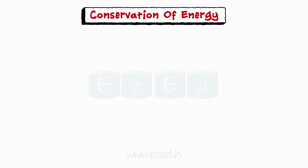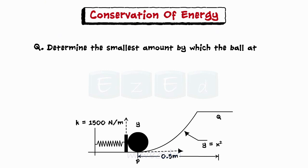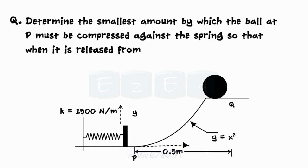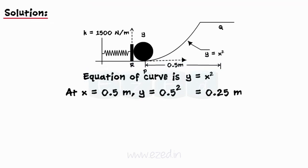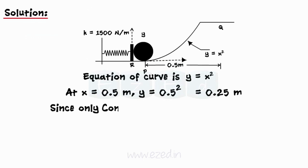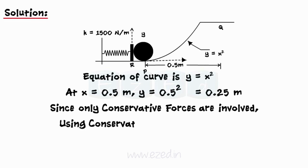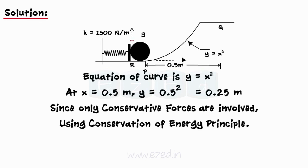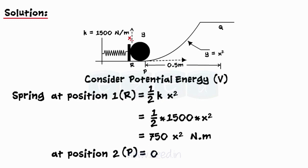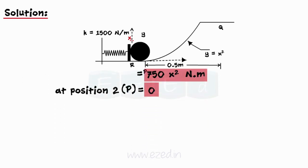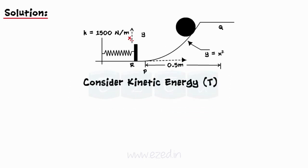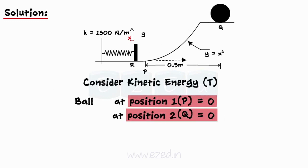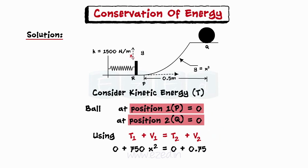Let us see how the equation of conservation of energy is used in a problem. Determine the smallest amount by which the ball at P must be compressed against the spring, so that when it is released from P, it reaches point U. Weight of the ball is 3 N. Neglect friction on the curved surface. The equation of the curve is given as Y equals X squared. Only conservative forces are acting — that is, spring force and weight force. So, using the conservation of energy principle, assume the spring is compressed by X meters. Considering potential energy for the spring at positions 1 and 2, and for the ball at positions 1 and 2, and considering kinetic energy — only the ball possesses kinetic energy — we use the conservation of energy equation to get the amount by which the spring is to be compressed.